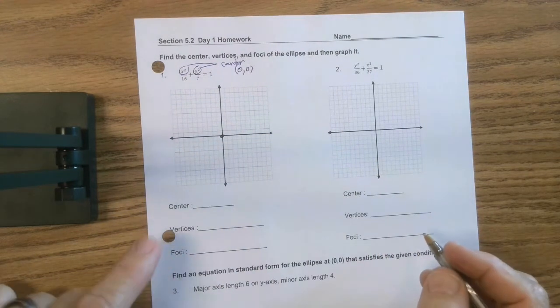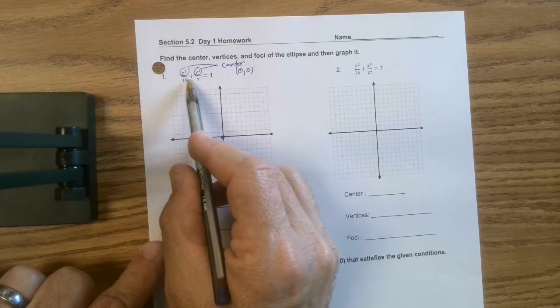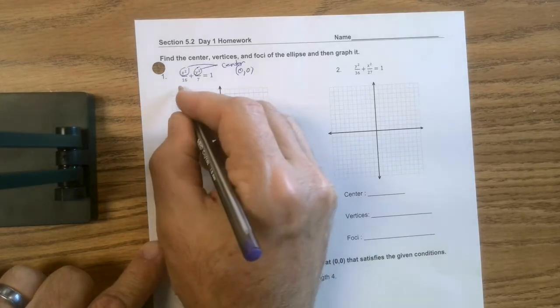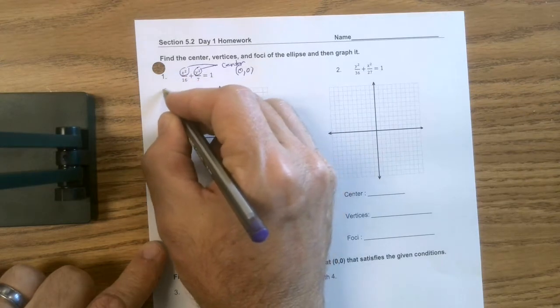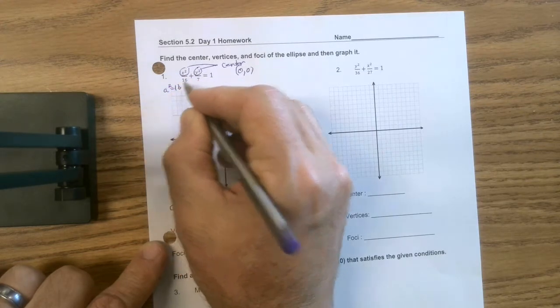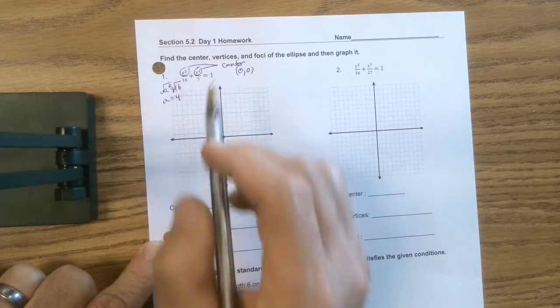Now I'm going to build my ellipse. Notice, Captain Obvious moment, what number is bigger, 16 or 7? Well, 16 is. So remember, that means that if you watch the pre-lesson, that means a squared equals 16. If we take the square root of that, we get a is 4. Now be careful.